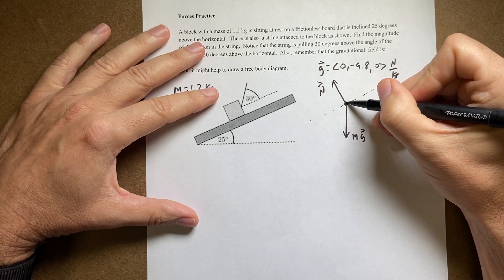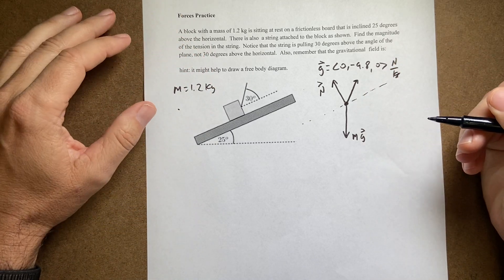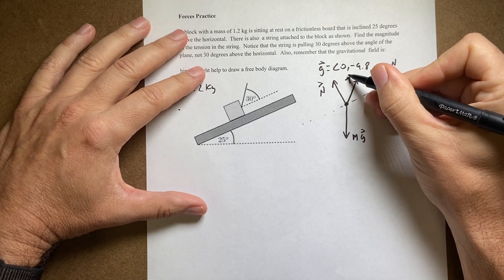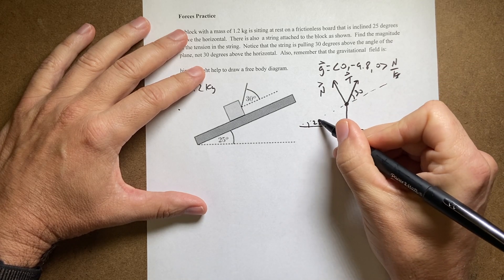Finally the tension. So the tension is like this. And I'll call that t. So this angle is 30 degrees and this angle is 25 degrees.